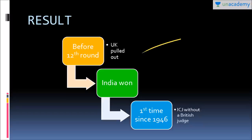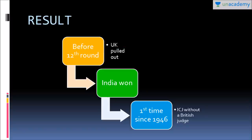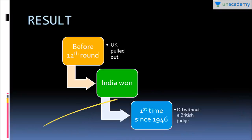As five judges are elected every three years, four vacancies were filled, and this contest was for the fifth position. Once Justice Christopher Greenwood pulled out, Justice Dalveer Bhandari was elected unopposed, securing votes of all 15 members of the UN Security Council and 182 to 183 members of the UN General Assembly out of 193. This is the first time since 1946 that Britain would not have any judge at the International Court of Justice.